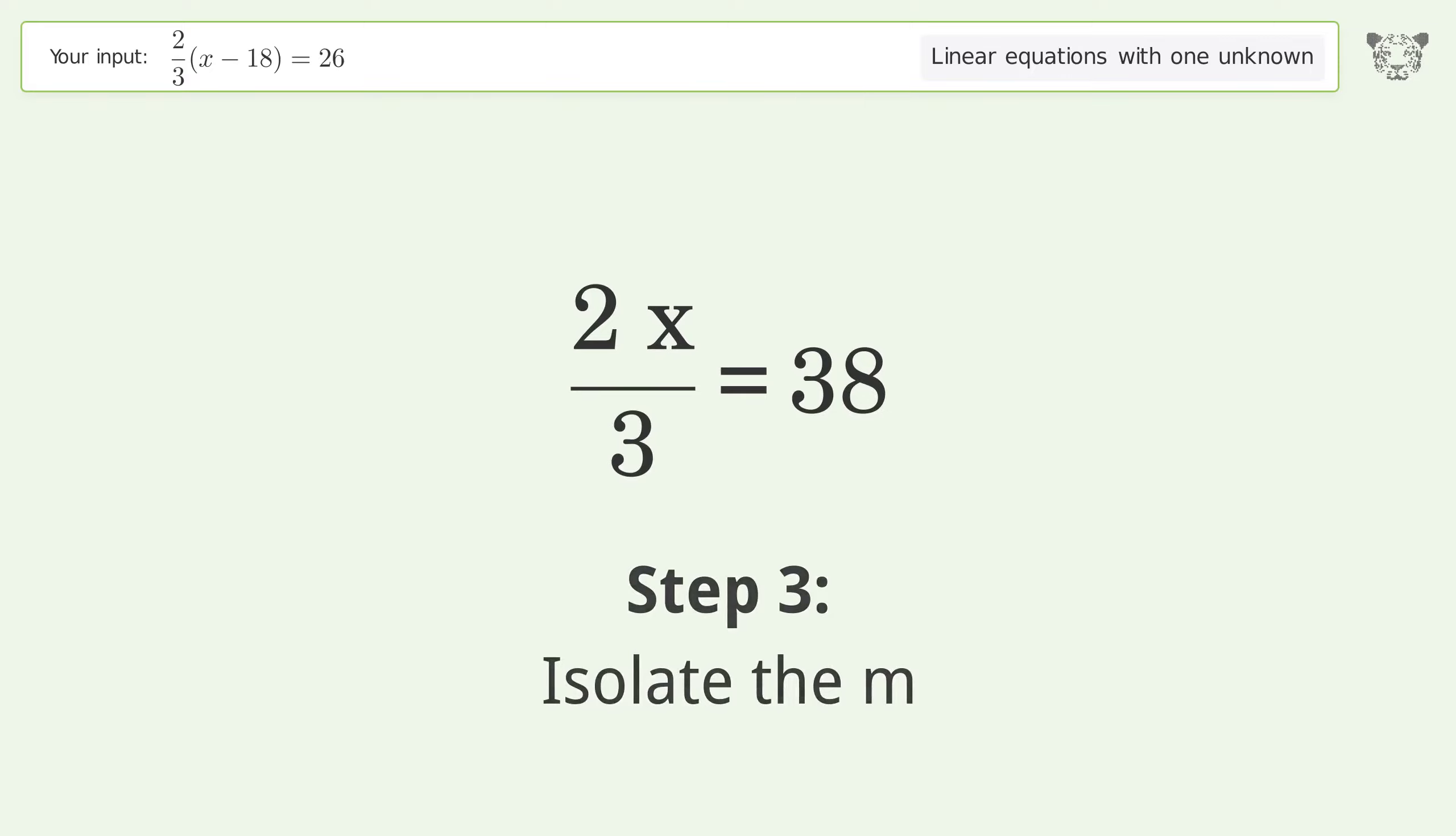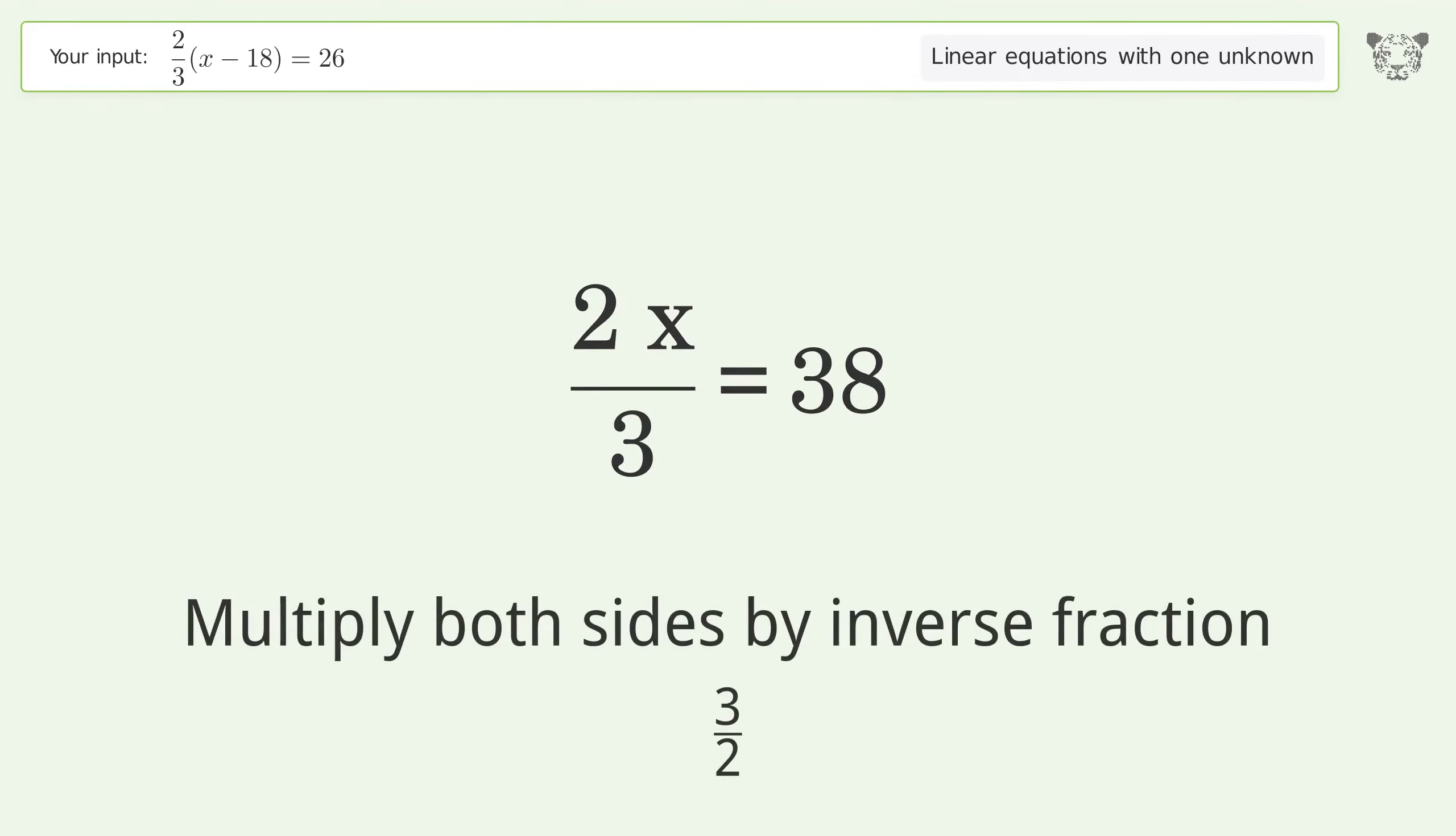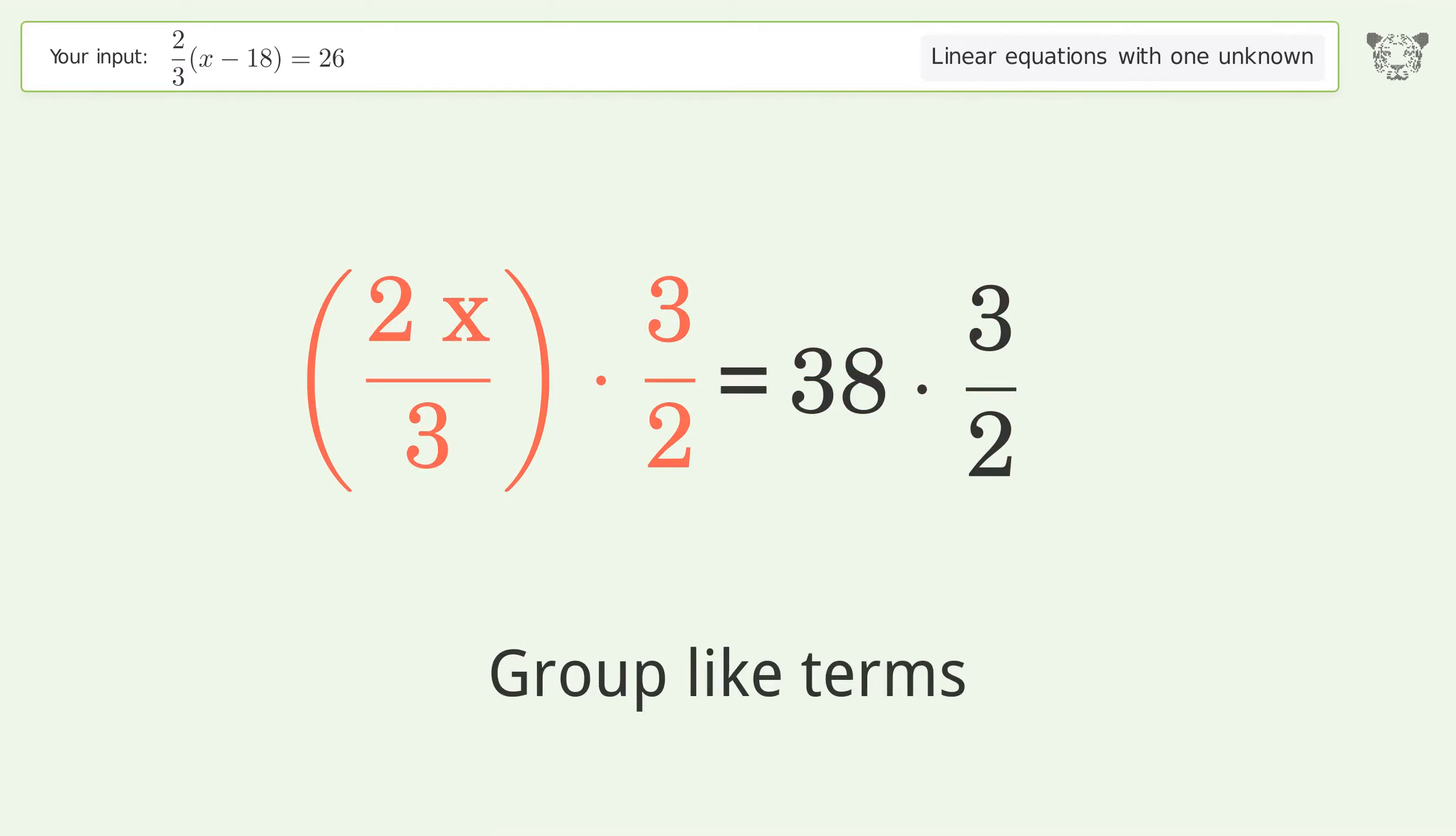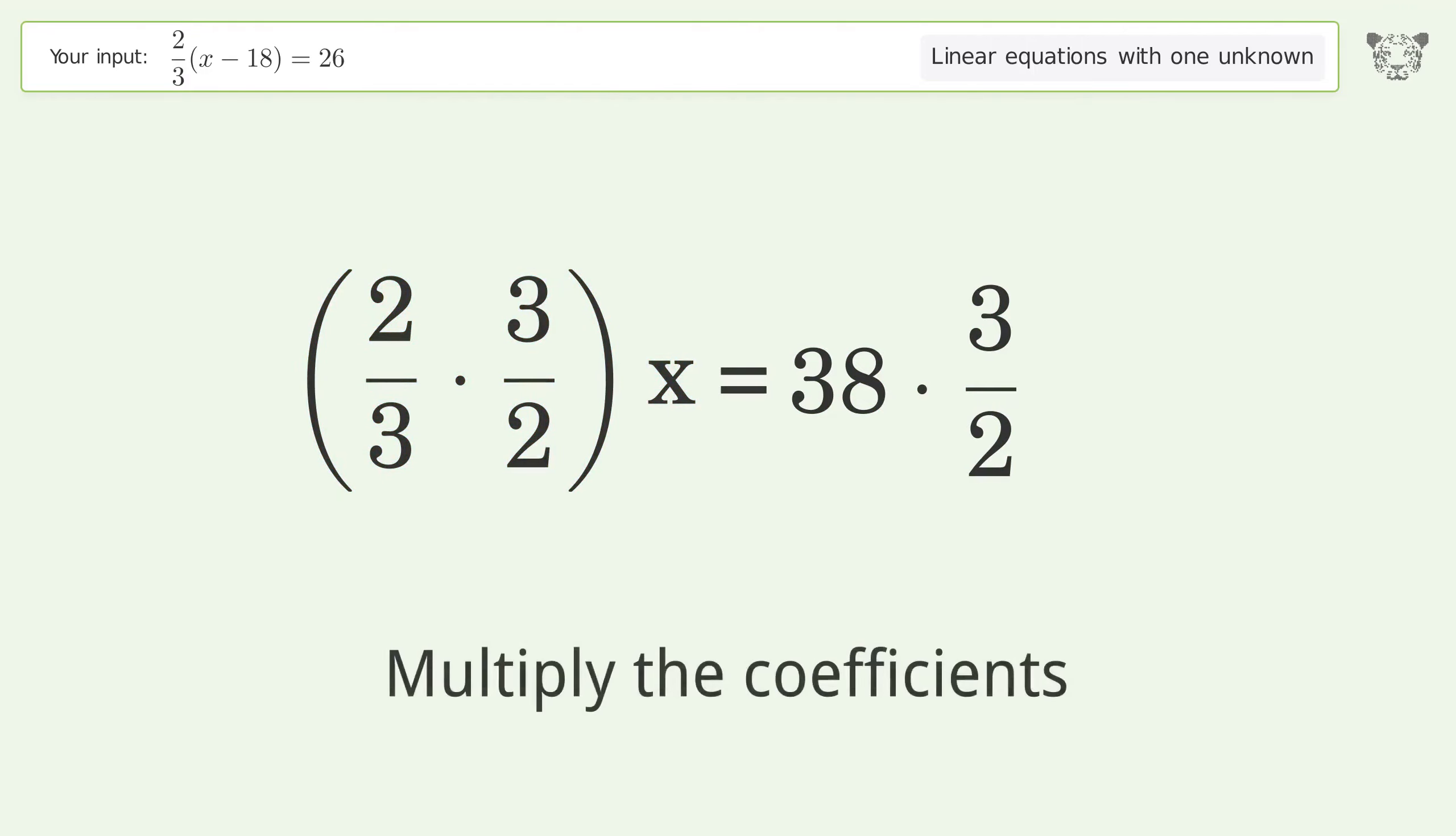Isolate the variable. Multiply both sides by the inverse fraction, 3 over 2. Group like terms. Multiply the coefficients.